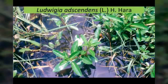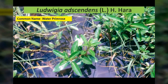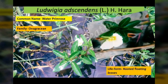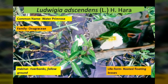Ludwigia adscendens, commonly known as water primrose, is a member of the Onagraceae family. It is a creeping aquatic or semi-aquatic perennial herb with attractive white flowers. Its stems and leaves can float on the water surface, enabling it to grow in deep or shallow water. It mostly occurs in freshwater pools, ditches, swamps, fallow and wet paddies, and is common in low-lying areas.